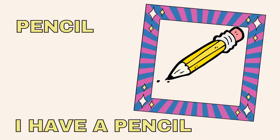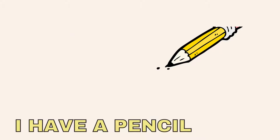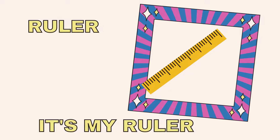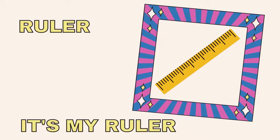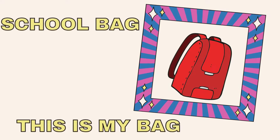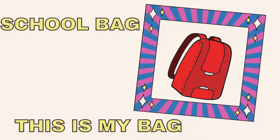Pencil — I have a pencil. Ruler — it's my ruler. School bag — this is my school bag. What is the color? It's red.